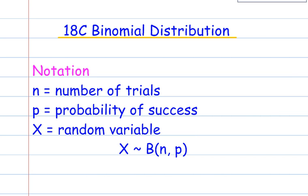So we have notation. N is equal to number of trials, P is the probability of success, X is the random variable. So X has a binomial distribution of N, P.